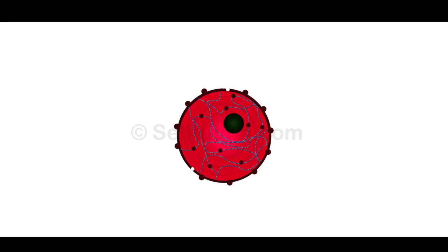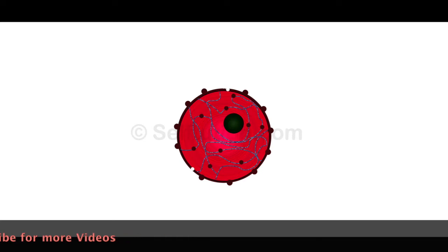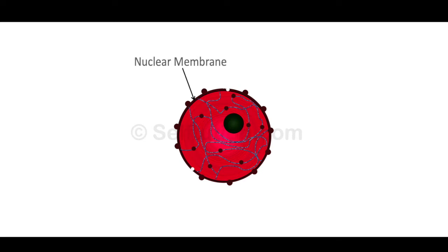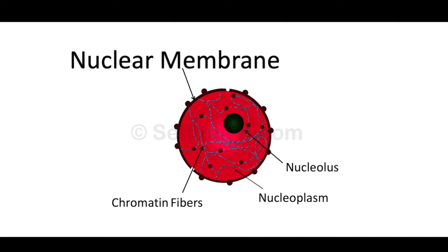The nucleus is a spherical body present inside the cell. It is the control center of the cell, regulating and coordinating the various life processes. Most cells have only one nucleus, but some cells like muscle cells have more than one. The nucleus comprises four parts: nuclear membrane, nucleoplasm, nucleolus, and chromatin fibers. The nuclear membrane is the delicate outermost covering of the nucleus; it separates the nucleus from the cytoplasm and has tiny holes that allow the exchange of substances between the nucleus and the cytoplasm.